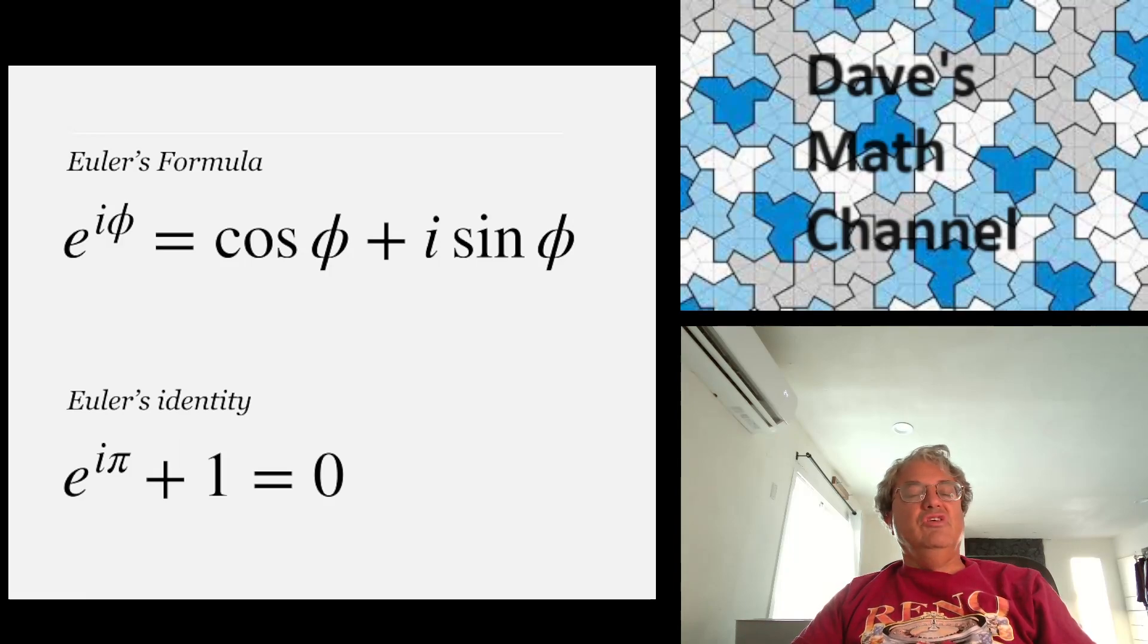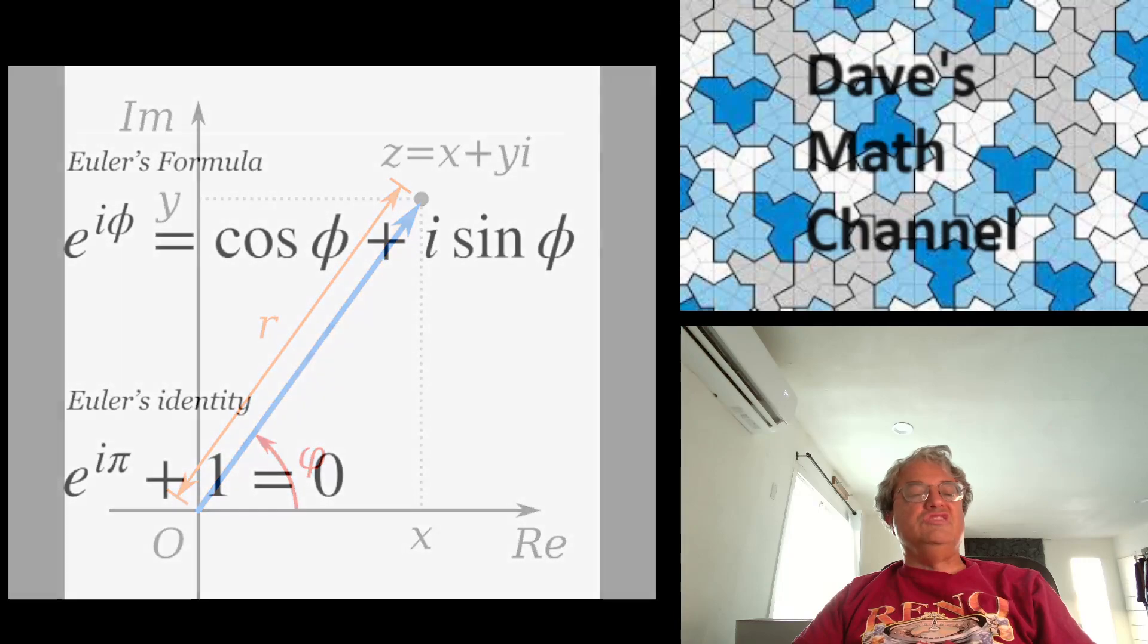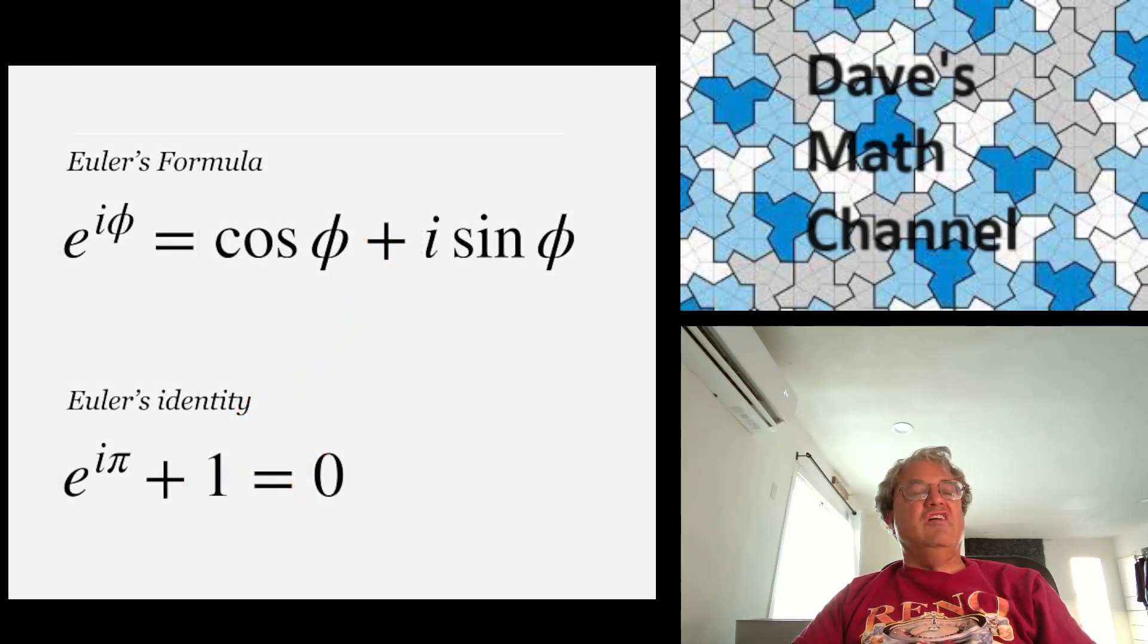And it turns out that e to the i phi is equal to cosine phi plus i sine phi. Pretty amazing formula. What this really means in terms of this picture here is that we can also call z, we can write z as R e to the i phi. That's another way to write z. So there's two representations of complex numbers, rectangular and polar, and a nice way to write polar is e to the i phi.